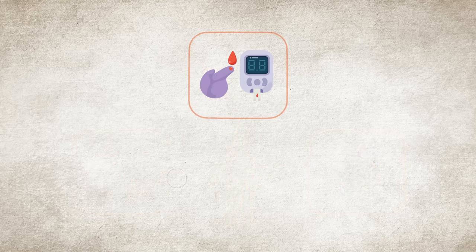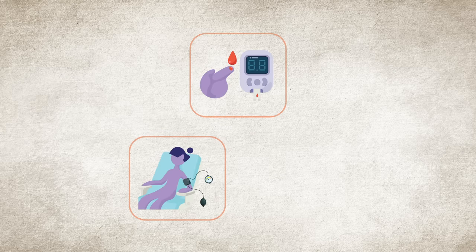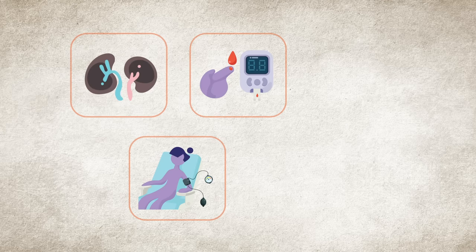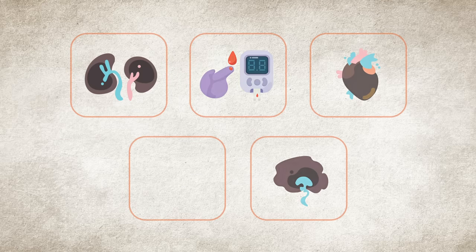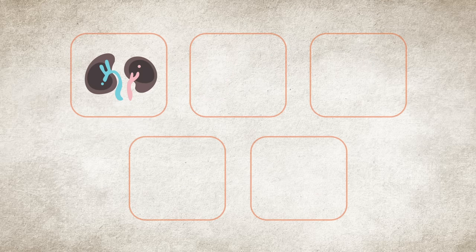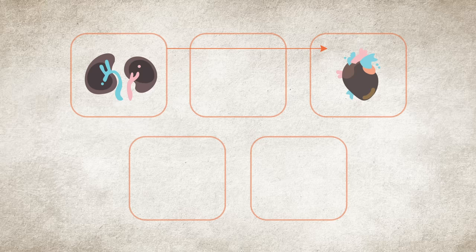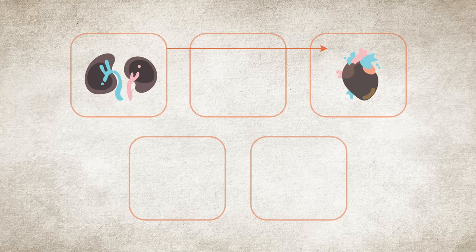For example, diabetes and high blood pressure are the first and second leading causes of kidney disease. Diabetes also increases the risk for heart disease and stroke. People with kidney disease are at higher risk of heart disease, and people with heart disease are at higher risk of kidney disease.